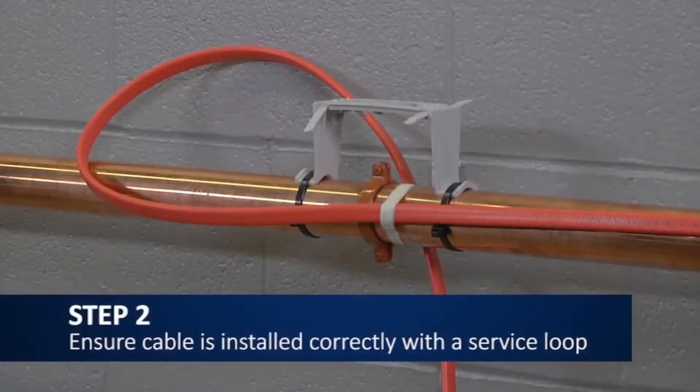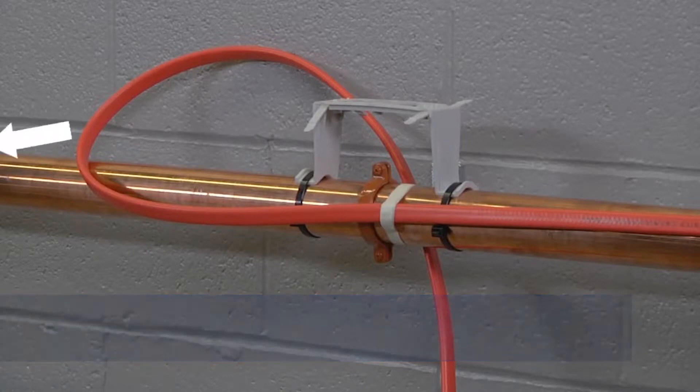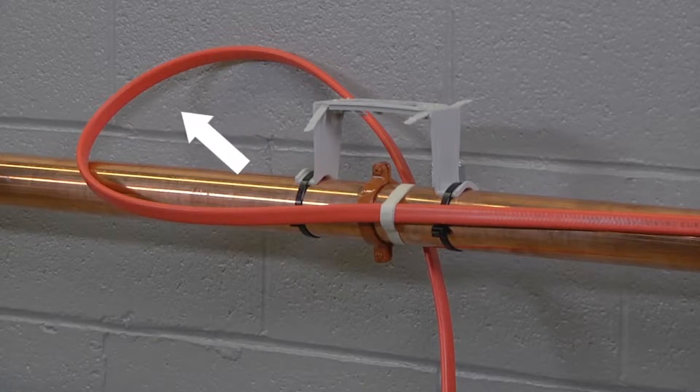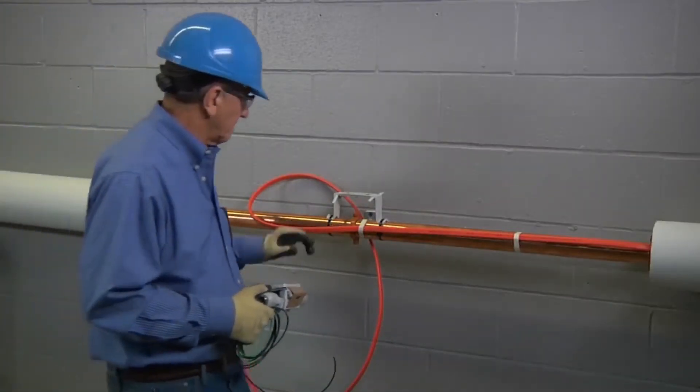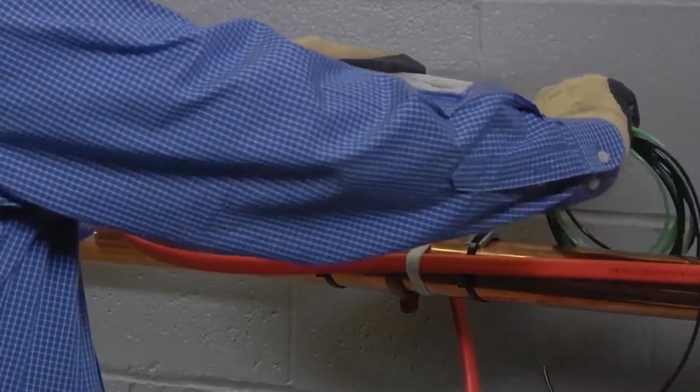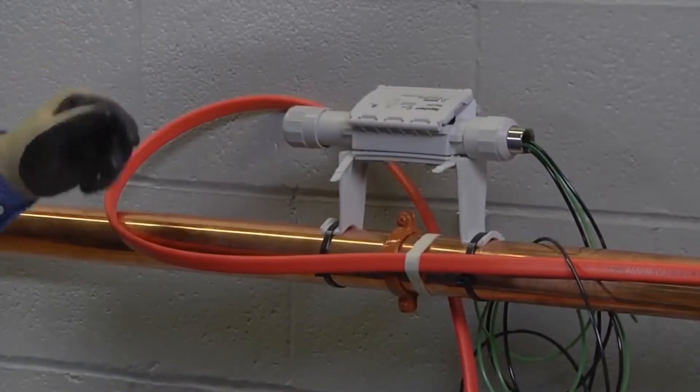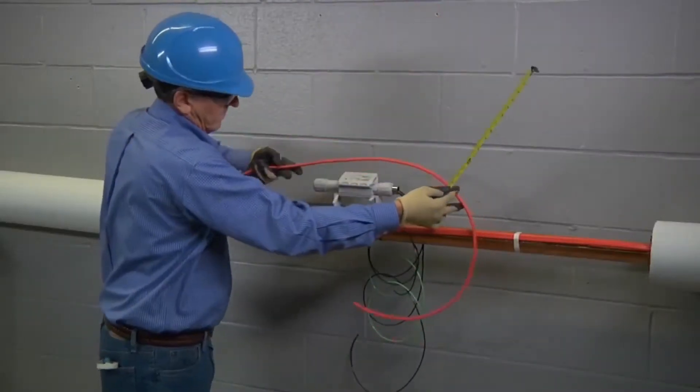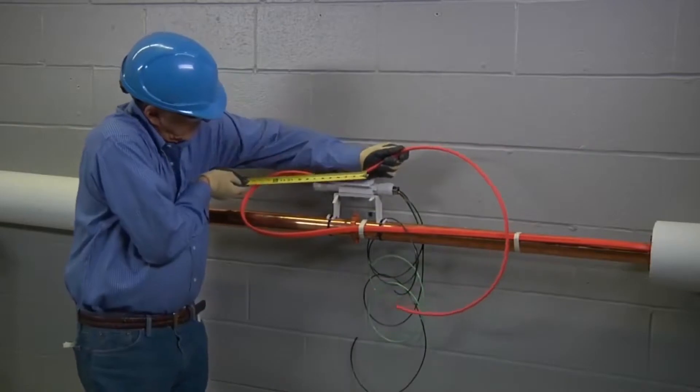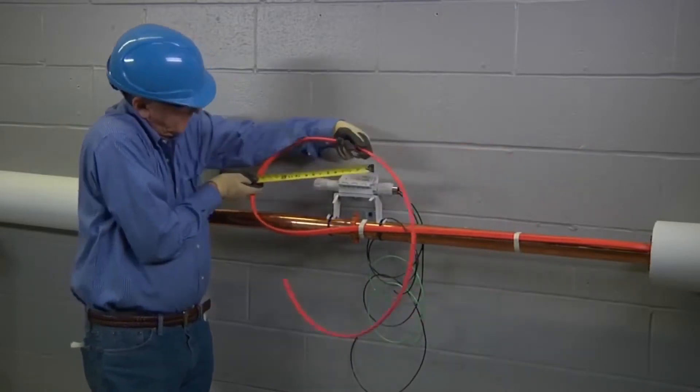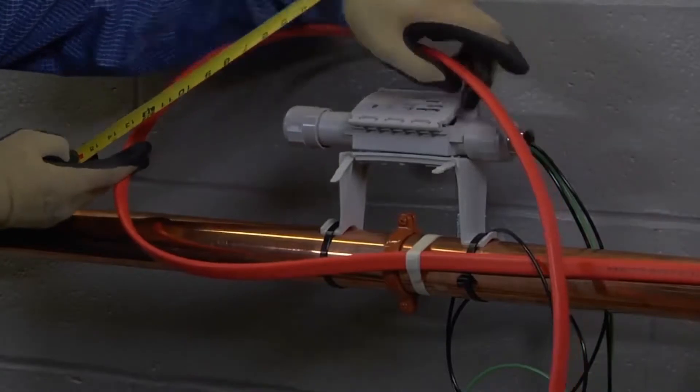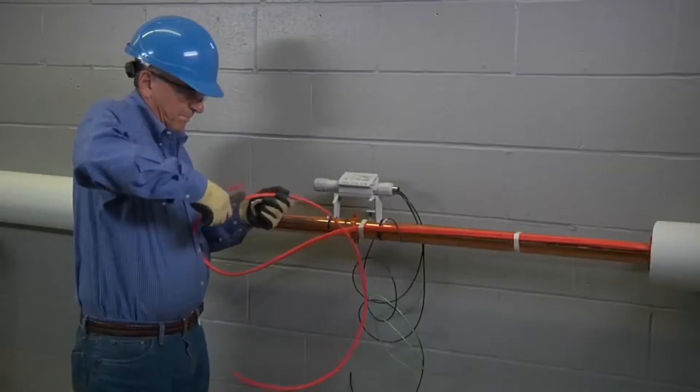Now, ensure that the heating cable - HWatt, XL Trace, RaySol, or Ice Stop - is installed properly on the pipe, and that there is a service loop at the location where the RayClick will be installed. A service loop is done by orienting the RayClick PC on the pipe with the conduit fitting facing towards the electrical junction box, and bending the heating cable 180 degrees, looping back towards the other end of the RayClick PC, allowing at least 12 inches of heating cable slack in order to make the connection.